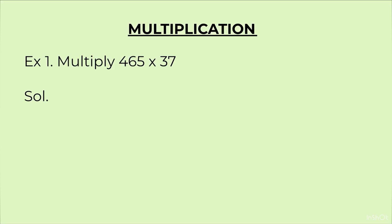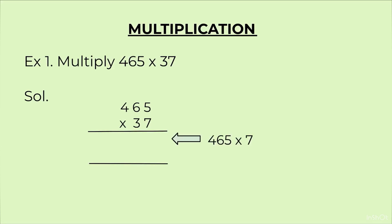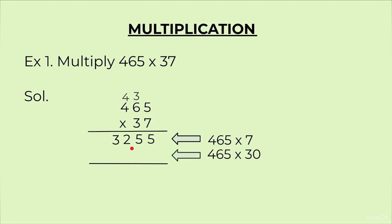Example 1: 465 × 37. We write them one below the other and put the multiplication sign. First we multiply 7 with 5: 7 fives are 35, carry 3, write 5. Then 7 sixes are 42, plus 3 is 45, carry 4, write 5. Then 7 fours are 28, plus 4 is 32. Since there is no other digit, we write the full 32.